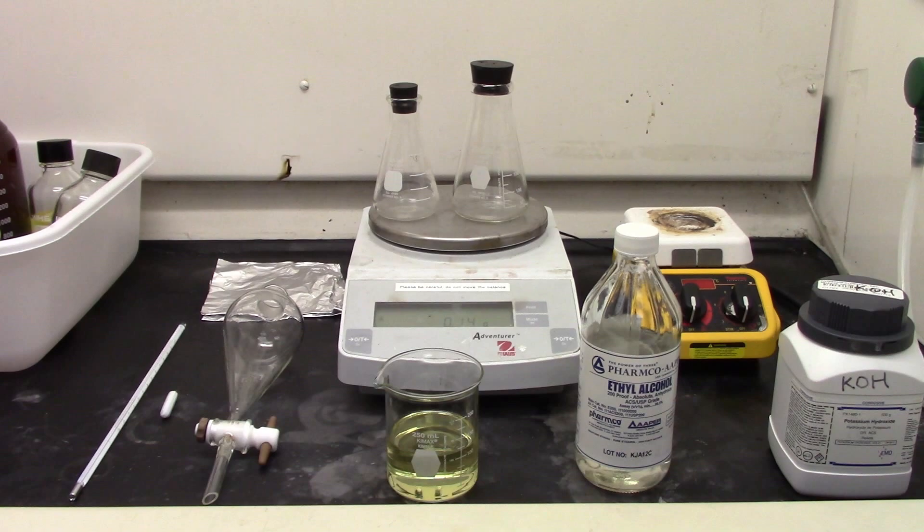For reagents you will need 100 grams of vegetable oil, 20 grams of 100% ethanol that is anhydrous and 1 gram of potassium hydroxide for the catalyst. You will also need to prepare the database tables as shown here.